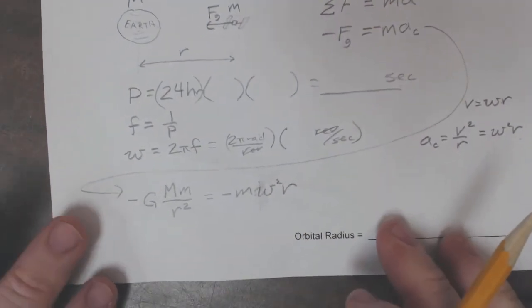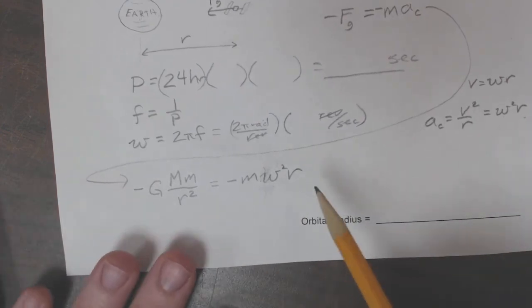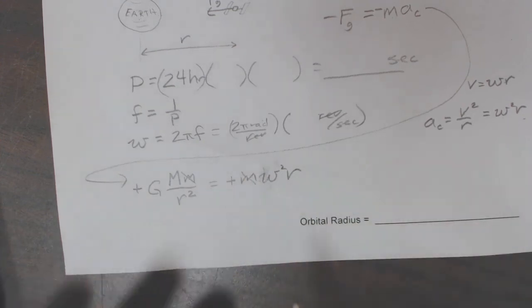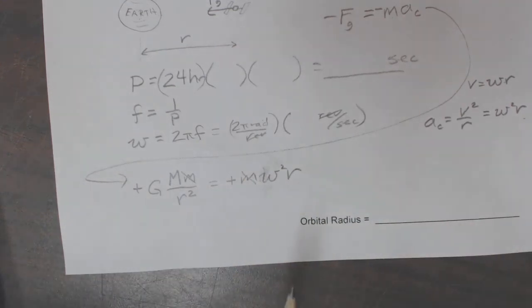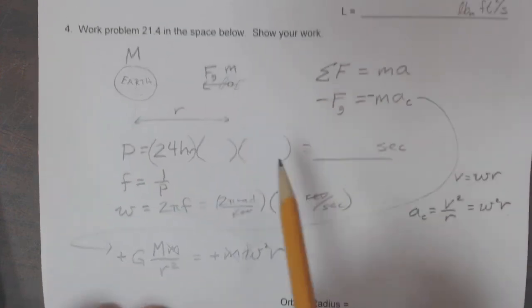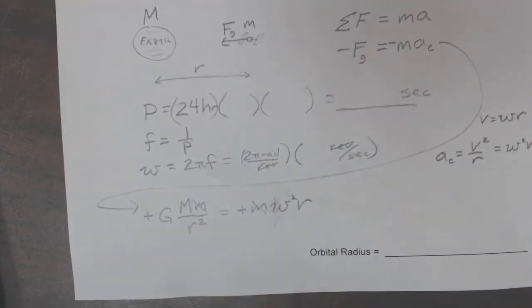At that point we see the minus signs go away, and also we see that the m's go away. So the mass of the satellite doesn't matter when we're talking about putting it up in an orbit of radius r such that it remains in a fixed position around the earth.